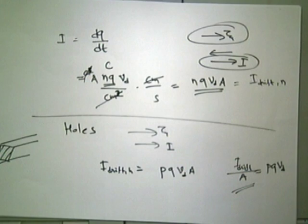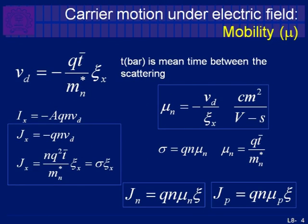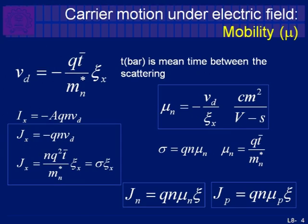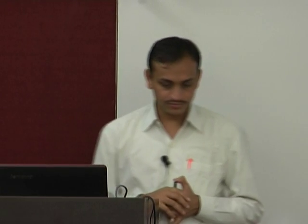The expression for current density is normally J; I is the current, J is the current density. The drift current expression, which has two negative signs that cancel out — the charge on the electron is negative and the force direction is negative — so both cancel and the direction of current is the same as the direction of electric field. There are two negatives in that expression.